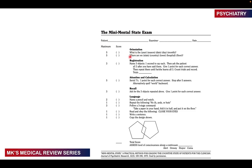Then you ask them where they are. The state — or in our case the province — the country, the town, the hospital, and the floor, whether they're on the ground floor, the second, third, or fourth floor. If they get each of these correct, you give them a single point for each one.